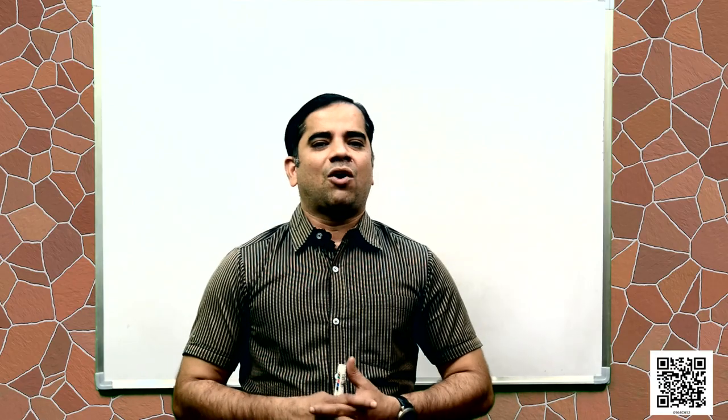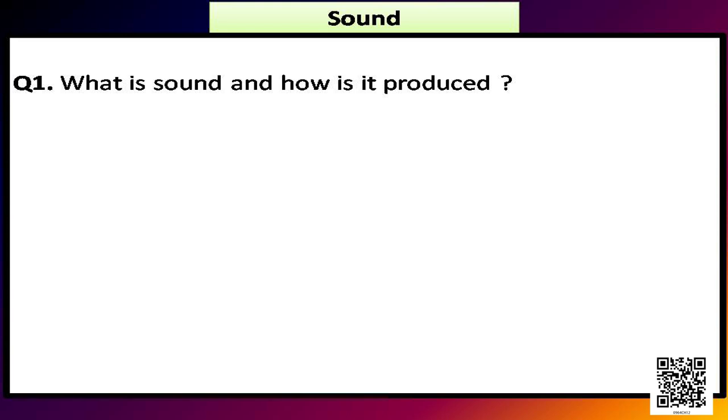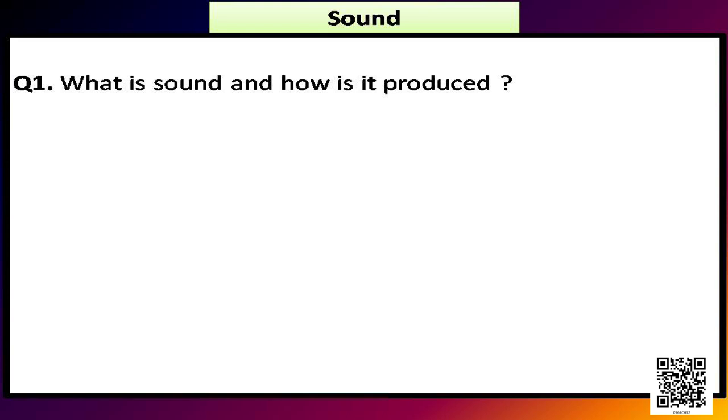Let us now discuss some of the questions of the exercise. Let us discuss the first question. It says what is sound and how is it produced? And the answer is sound is a mechanical energy which produces a sensation of hearing. When an object is set into vibrations, sound is produced. Hope you have understood the answer for question 1.